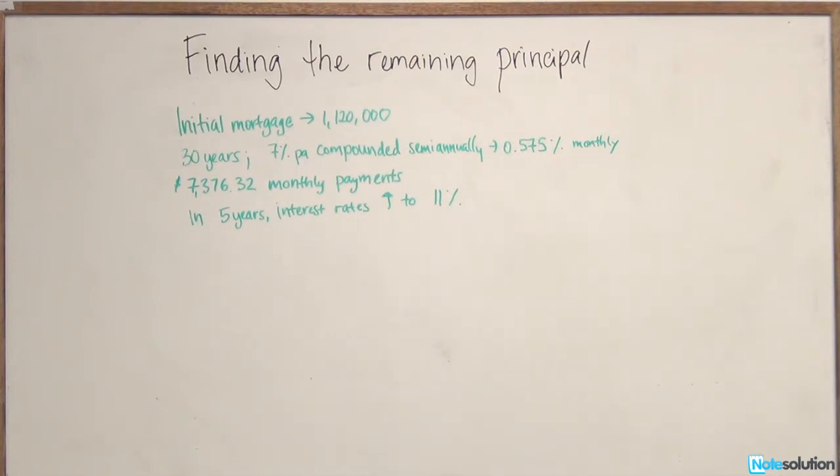We know that the monthly payments initially were $7,376.32, and we also know that 5 years have gone by, and the interest rates suddenly went up to 11%. So given this change, what are the new monthly payments that Mohamed is going to have to make?